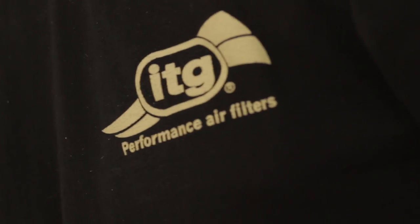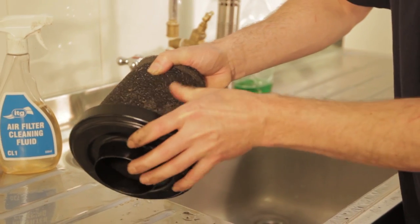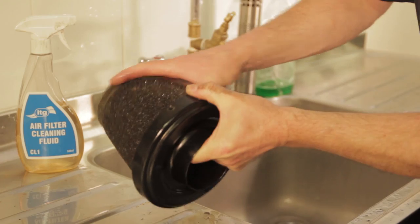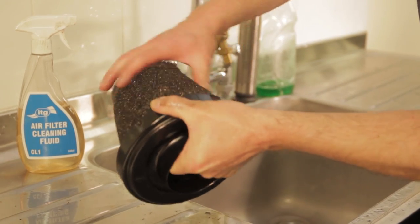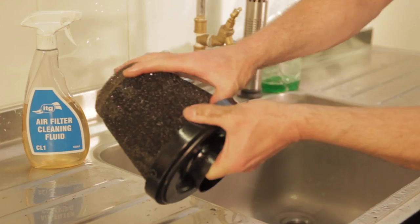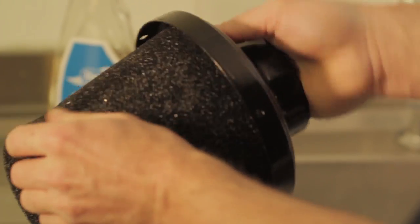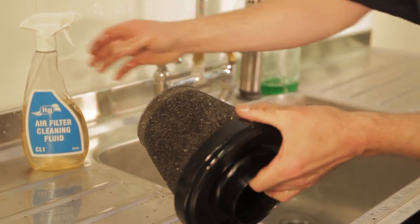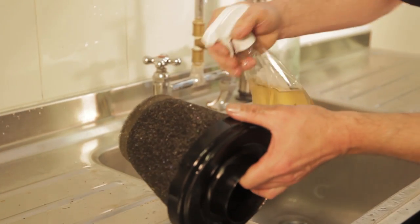With a good liberal coating applied, you can now start to massage it into the foam. What we need to do is work it down into all the layers. If necessary, apply another coating.